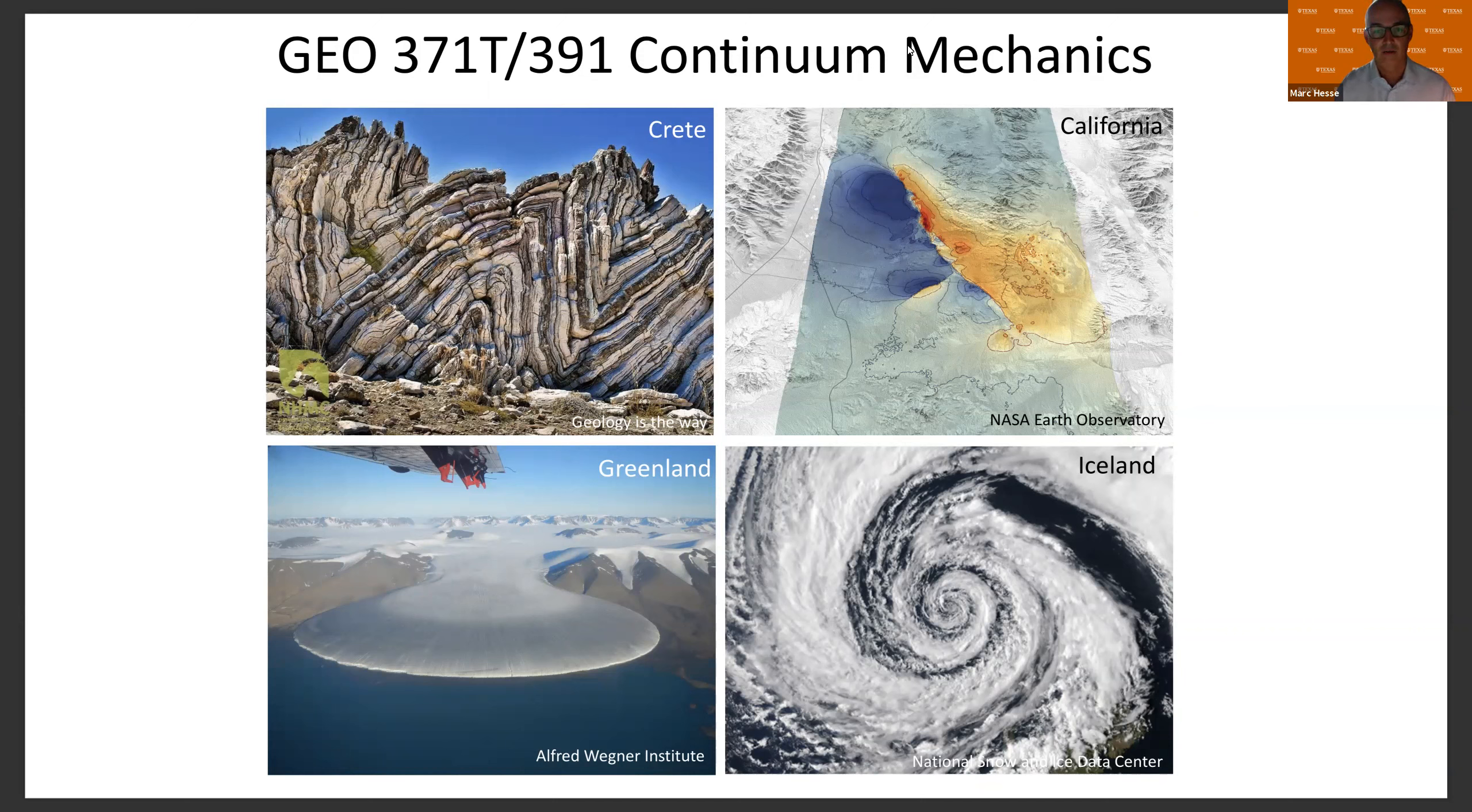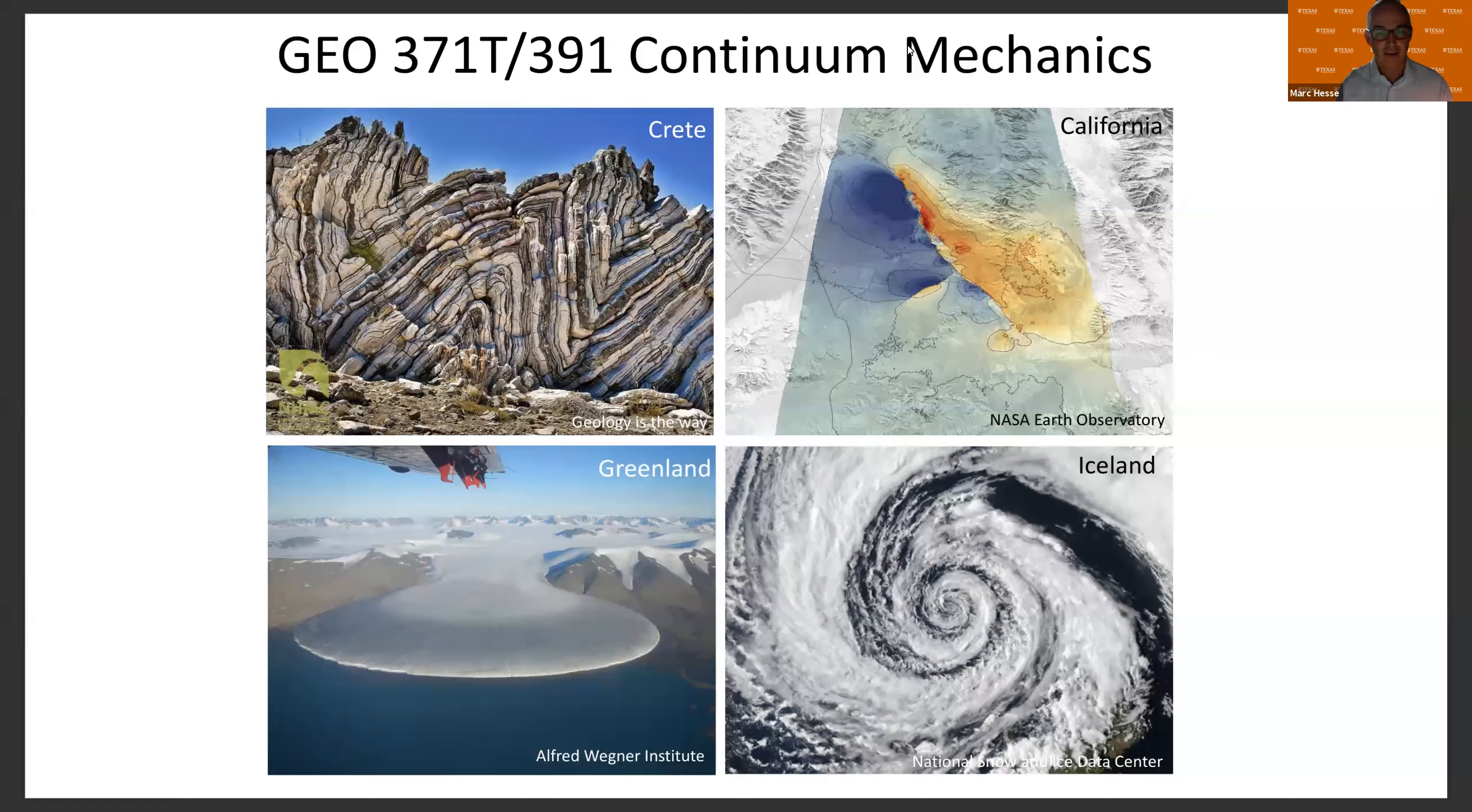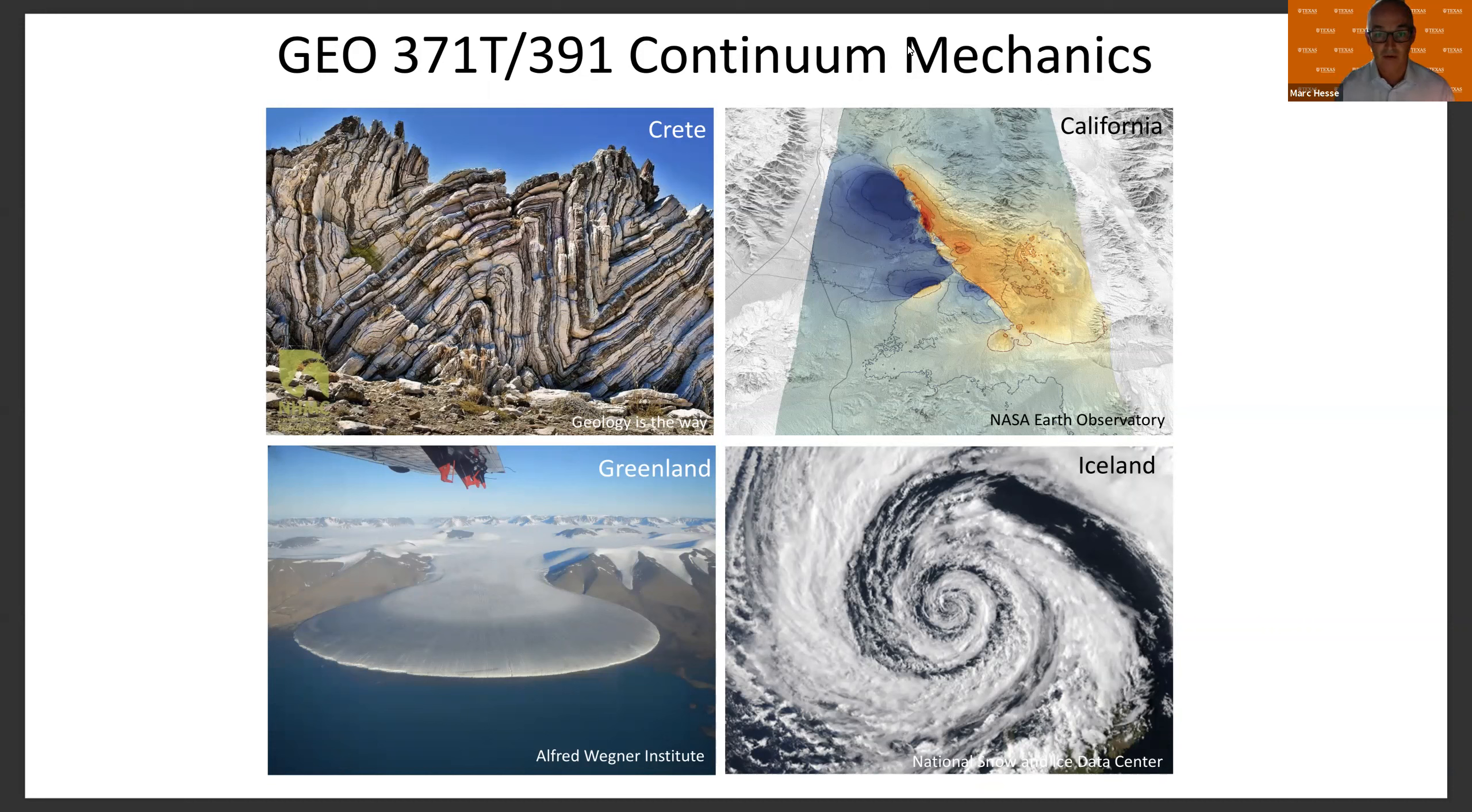On the top right, you see an image generated by satellite geodesy on the surface deformation following a strike-slip earthquake in California, in this fault that you can see. And this deformation very nicely shows actually the stress distribution.